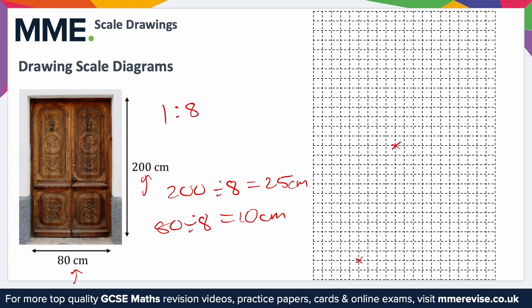I'm going to choose a point here where I know the drawing will fit. Then I draw the width of the door, which is 10 centimetres — counting 10 squares across. Then I draw the height, counting up 25 squares. Once those two sides are drawn, because this is a rectangle I can draw the top across at the same width and connect the two sides — and there's our scale drawing.